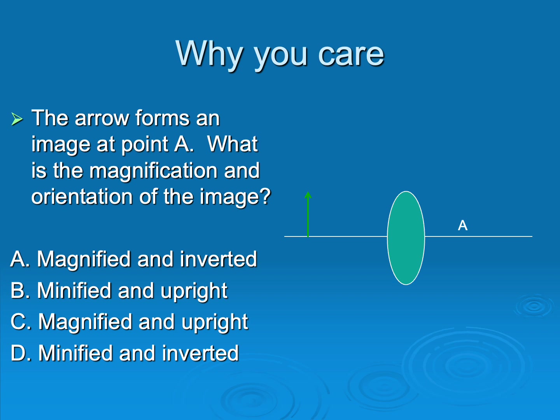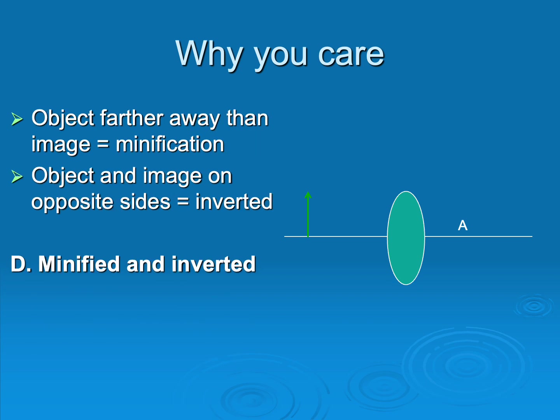You could be in a testing situation where they don't give you numbers, just a diagram. They might say: here's an object at the green arrow forming an image at location A — tell me about magnification or minification, and whether it's upright or inverted. You would use the laws of U over V. You can see the object appears farther from the lens than the image, giving minification, and they're on opposite sides, so it's inverted. That gives you choice D.